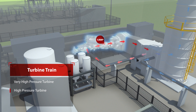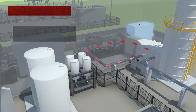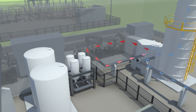The air from the high-pressure turbine is then reheated to 1,600 degrees in the low-pressure turbine. This process rapidly changes the volume and velocity of the air, producing energy that drives an electrical generator. Altogether, a single SmartCASE train can produce up to 160 megawatts of electrical power.